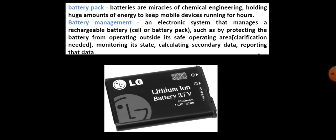What is battery management? An electronic system that manages a rechargeable battery, such as by protecting the battery from operating outside its safe operating area — that is, monitoring its states, calculating secondary data, reporting the data, etc. In our mobile, usually we will do power saving mode or set the timing to auto lock.